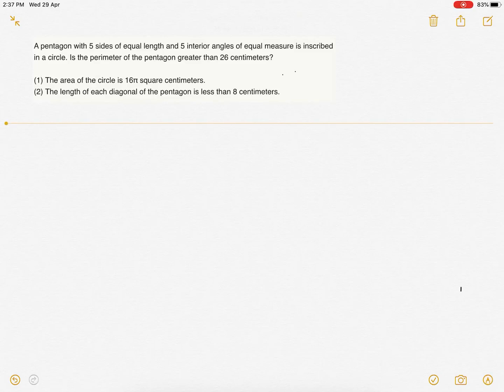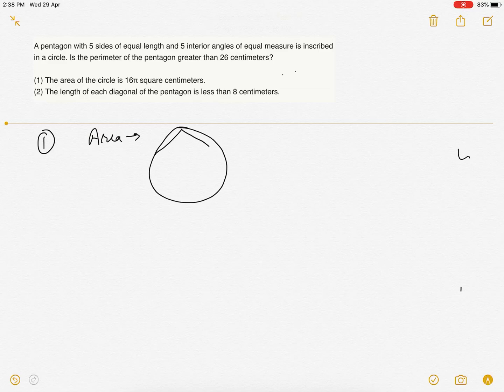In this question, is the perimeter greater than 26 centimeters? First statement: the area of the circle is given. This is the circle and this is the inscribed pentagon. If the area of the circle is given, we can calculate all the sides, so we'll get to know whether the perimeter is less than or more than 26. This is sufficient.